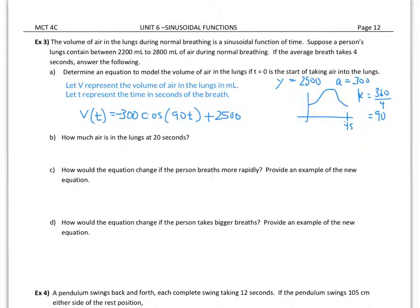Okay, so I have my let statements: V representing the volume of air in the lungs in milliliters, and t represents the time in seconds. How much air is in the lungs at 20 seconds? We're just going to evaluate that. The volume at 20 seconds, so we're just going to replace the t with 20, and throw that in the calculator, and it will give us the volume, which should be somewhere between 2200 and 2800 milliliters.